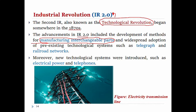Pre-existing technologies such as telegrams, railroads, and networking were expanded. New technological systems were also introduced, such as electric power and telephoning, during Industrial Revolution 2.